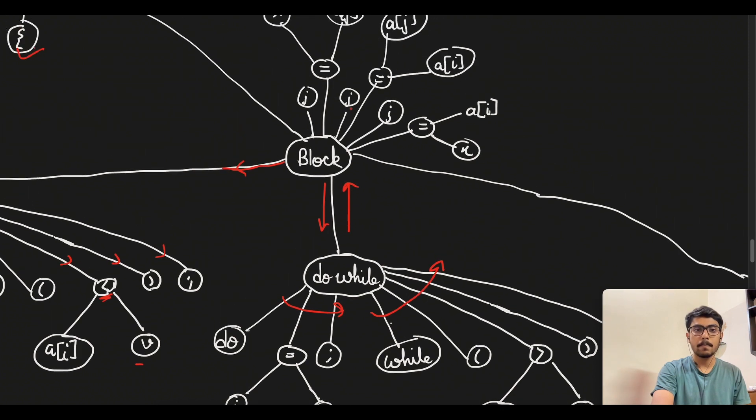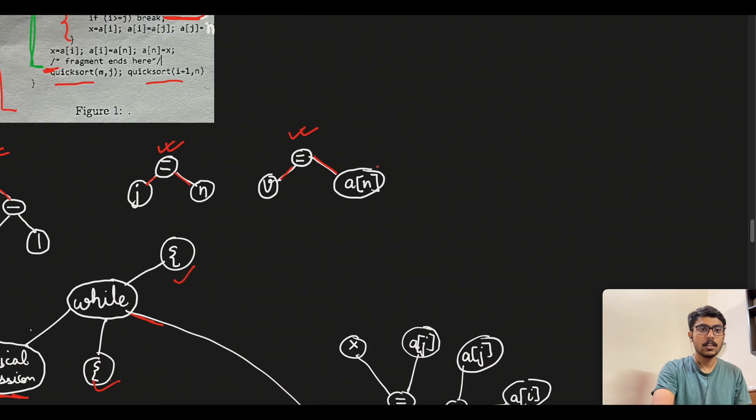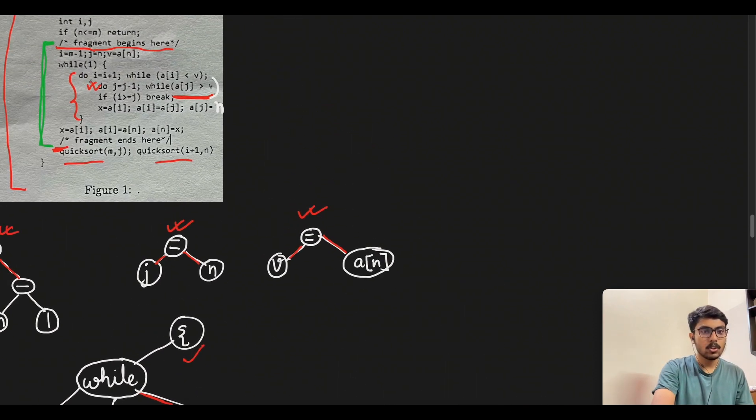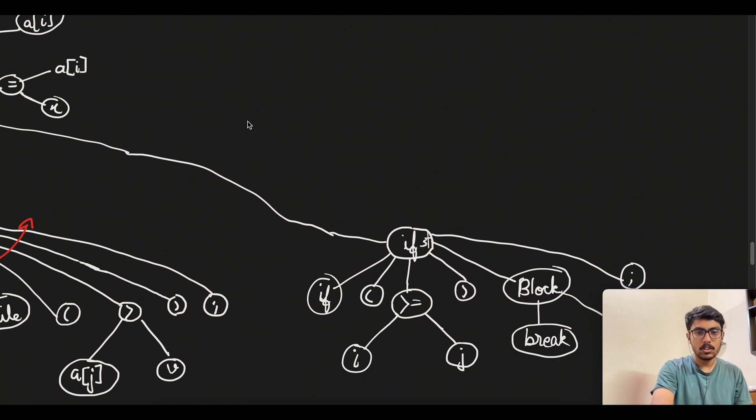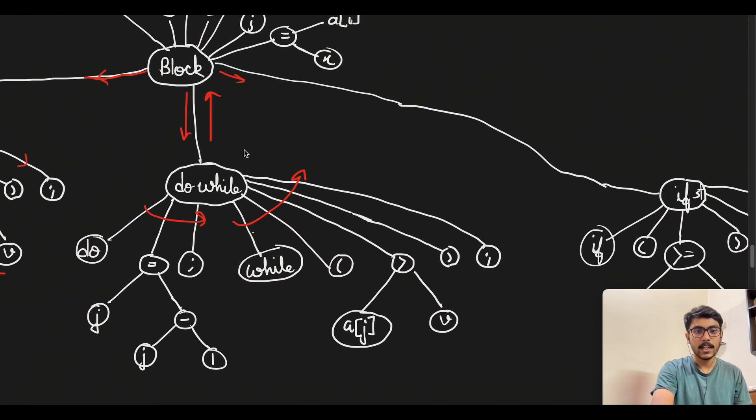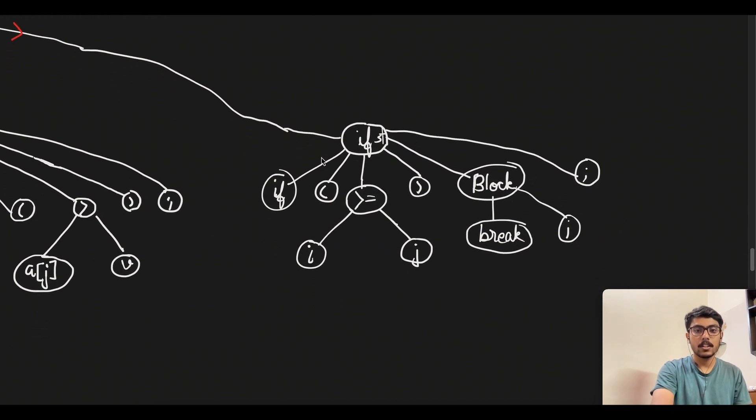After this do while executes, once the control comes here and then goes back, we will have this here again. If we see what is written next, after both the do while loops we have if i is greater than equal to j break. If i is greater than equal to j then we need to break. We can see that after the second do while we have this branch.